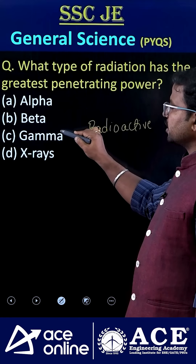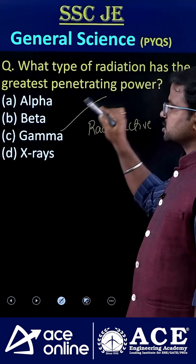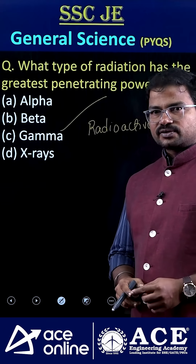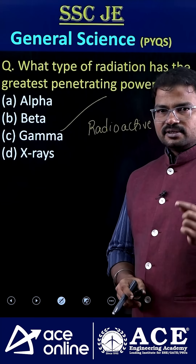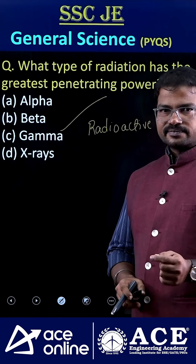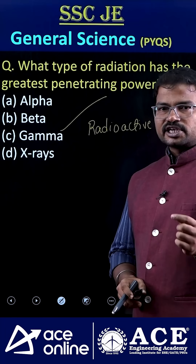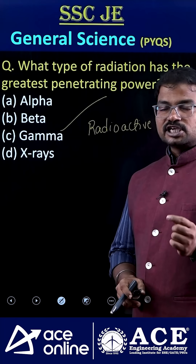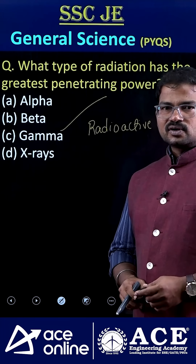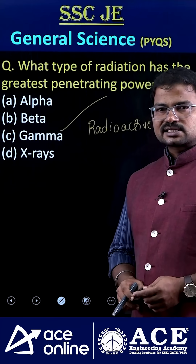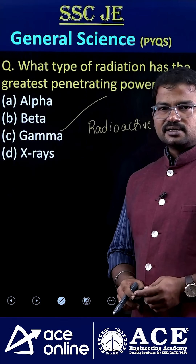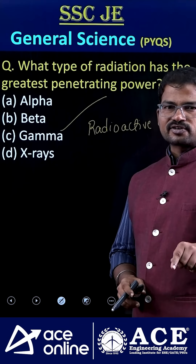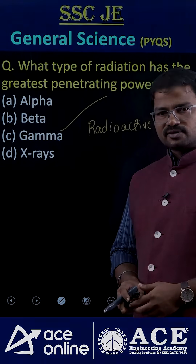So the correct answer is option C. Here is a question for you: to produce gamma rays especially in chemotherapy, which element is mostly used — cobalt-60 or cobalt-59? If you know the answer, please comment. Thank you.